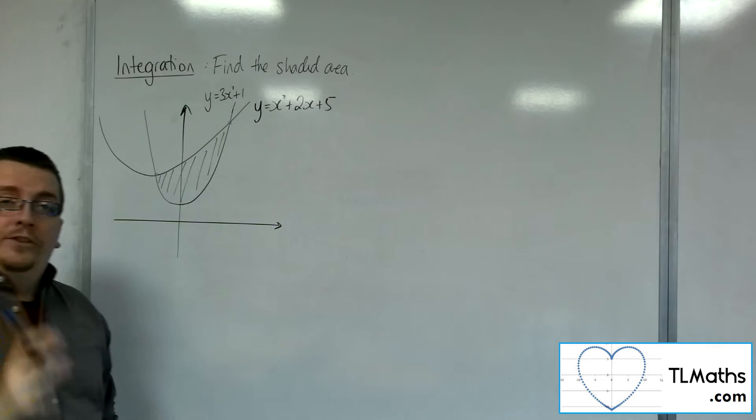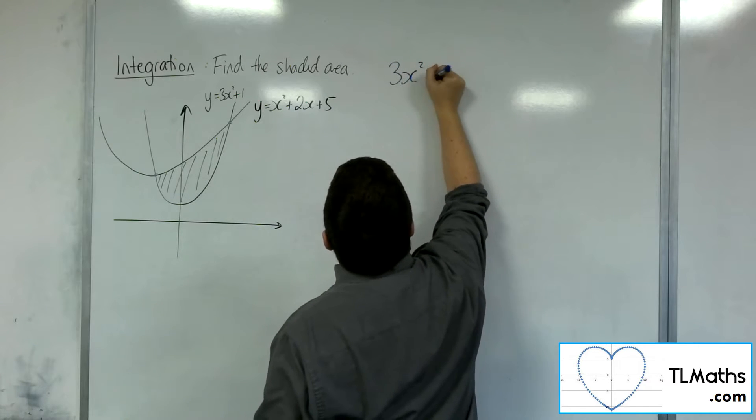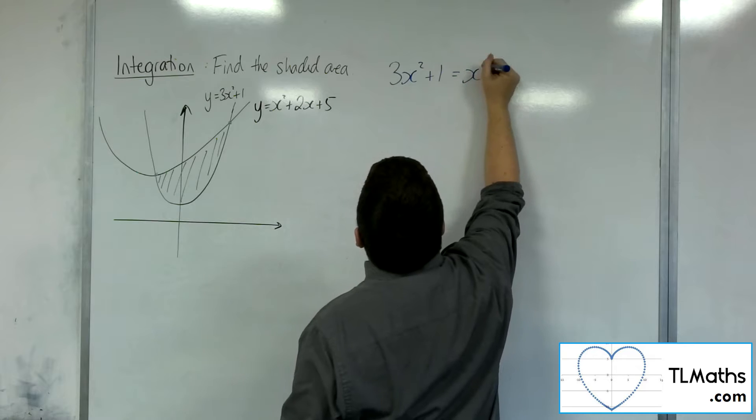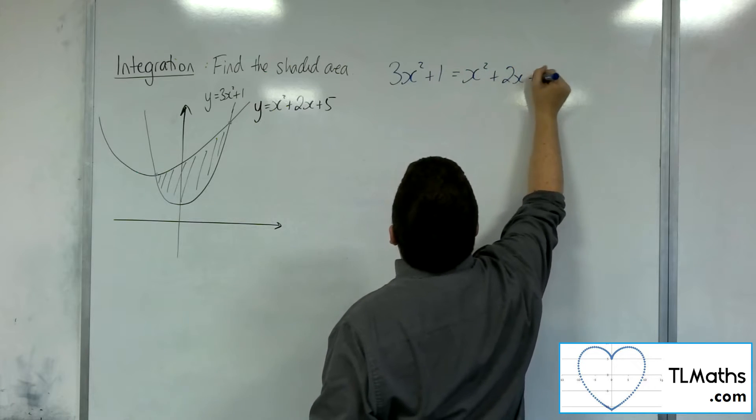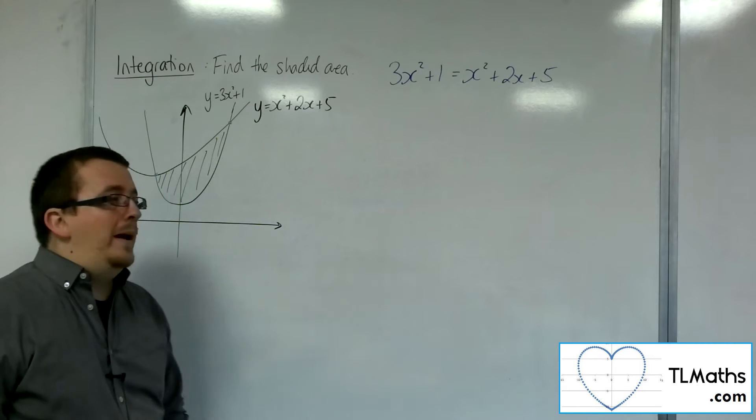So in order to do that, I'm going to first of all put one equal to the other. So the 3x squared plus 1 equal to the x squared plus 2x plus 5. And I should be able to solve this equation in order to find out there's two x values.